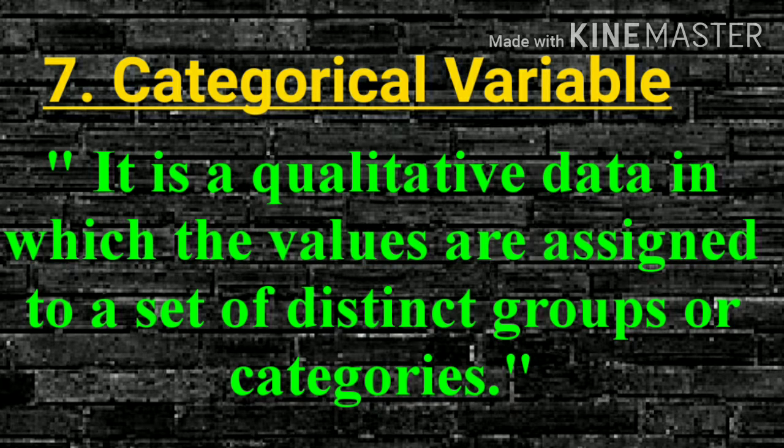For example, blood groups — it is a categorical variable. The two subtypes are Dichotomous Variable and Trichotomous Variable.